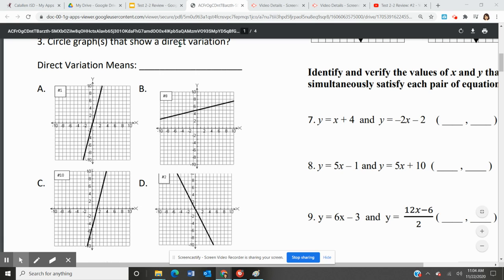Number three says, circle graphs that show a direct variation. Direct variation means that it is proportional.